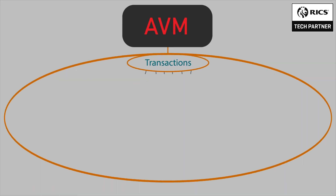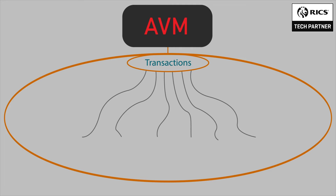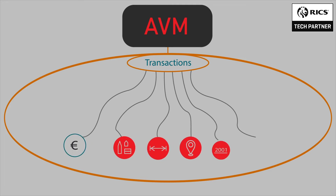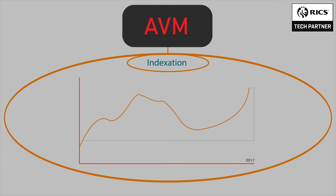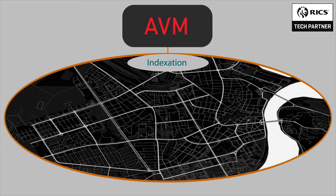The model uses sophisticated algorithms to find comparables which match the valued property best, using past transactions and a few selected criteria: type of property, size, location, construction date, etc. Furthermore, property values can also be indexed to shape the current value by analyzing changes in value from one district or neighborhood to another.